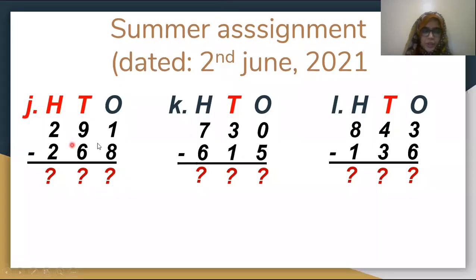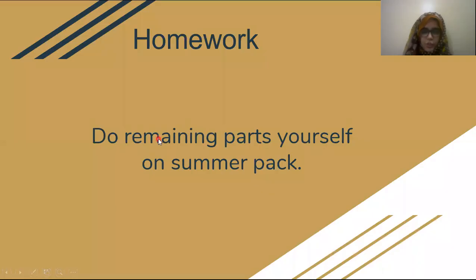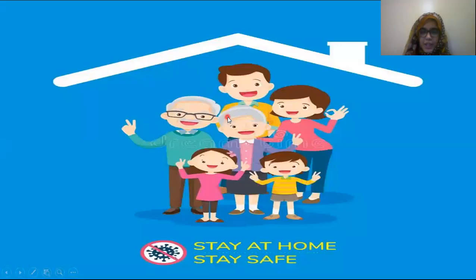Additional questions: 8 minus 7, 813 minus 615, and 843 minus 136. You have to borrow the same way as shown. Solve parts A, B, and C and the remaining parts yourself for your assignment — this is your homework. Stay at home, stay safe, students.